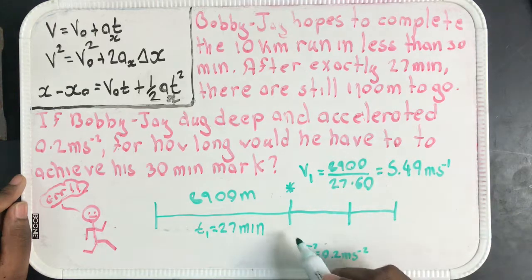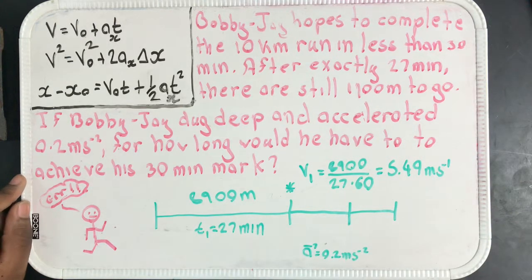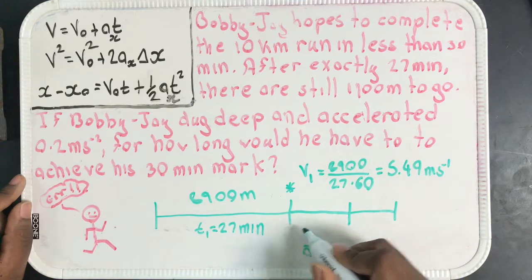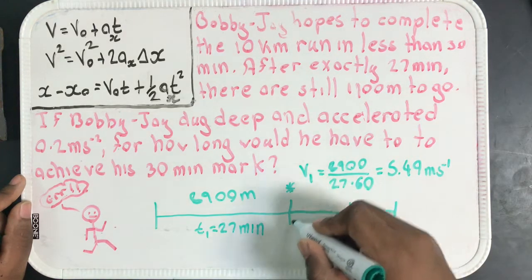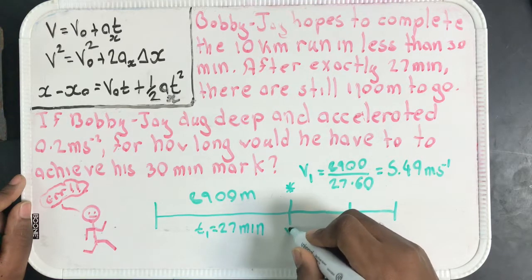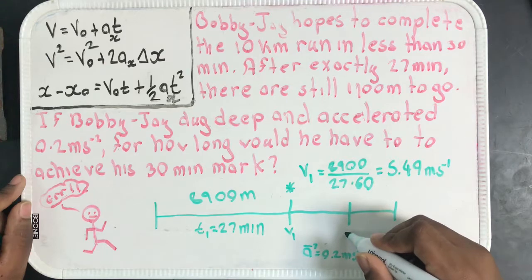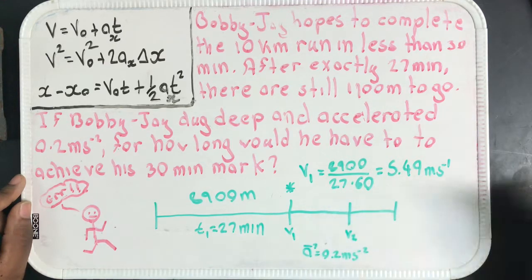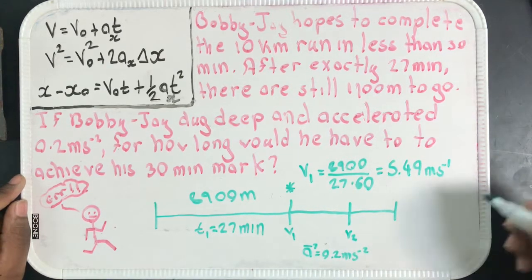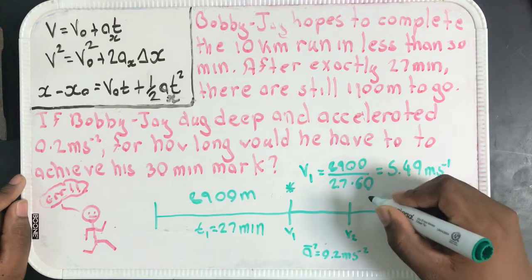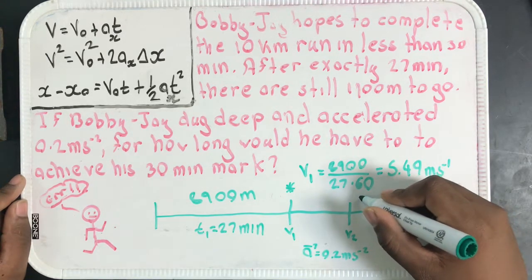And right here, this is when he pushes the gas and he starts to accelerate. So right here I'm just going to write, I'll put that v1 right there, and then he finishes with some velocity v2 right here. And then for this stretch let's assume that he has no acceleration and he just cruises.